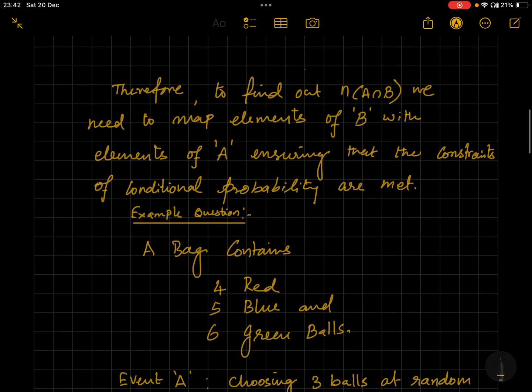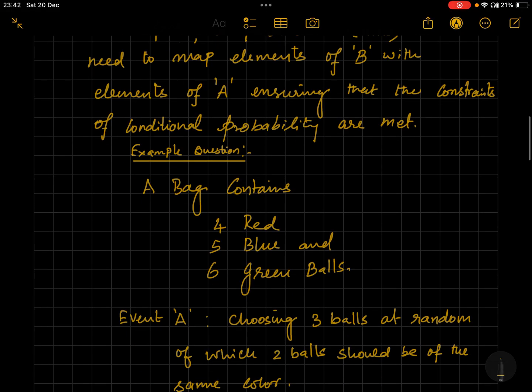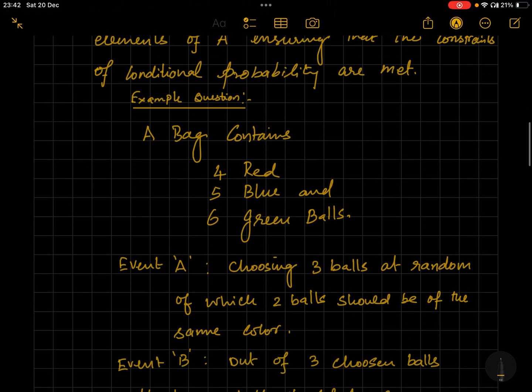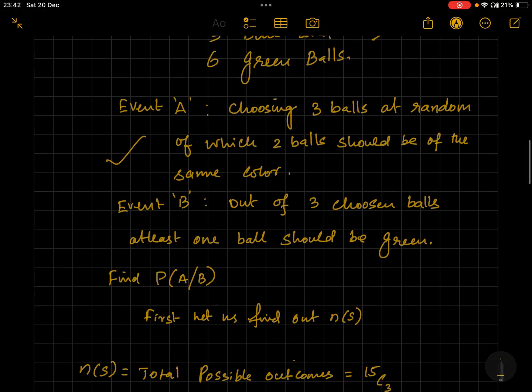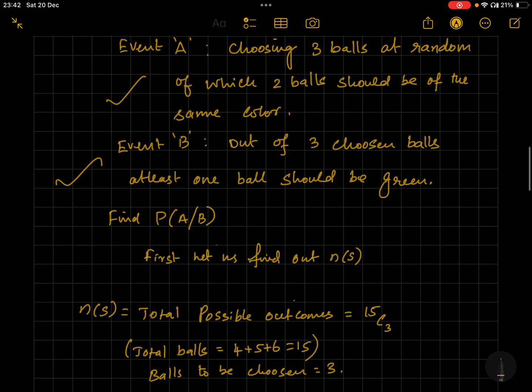Why should we do this reverse way, B with A? Because B is the sample space in this case. We have to ensure B with the conditions of A so that the constraints of conditional probability are met. Let's solve one example question and understand it better. The bag contains four red, five blue, and six green balls.